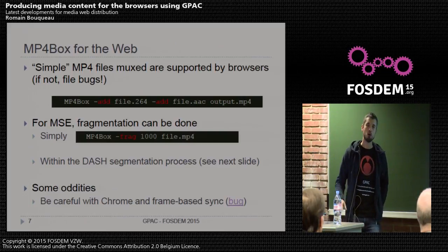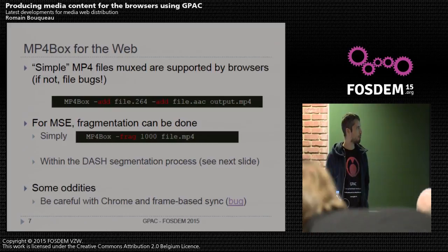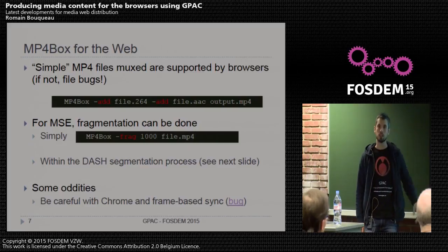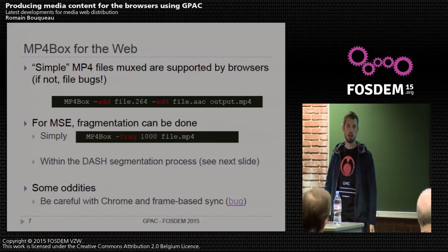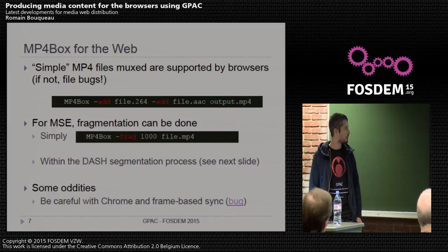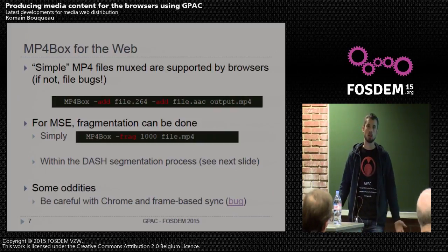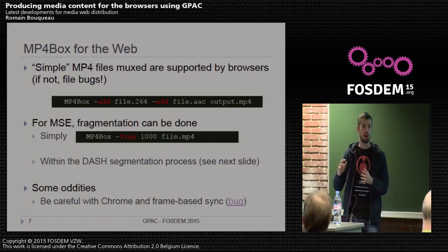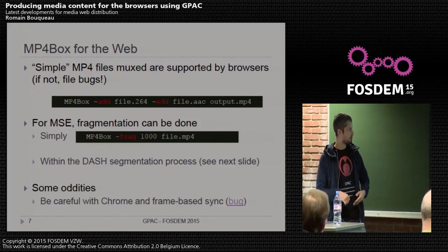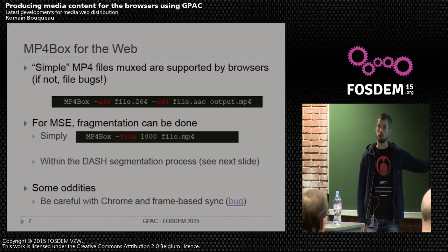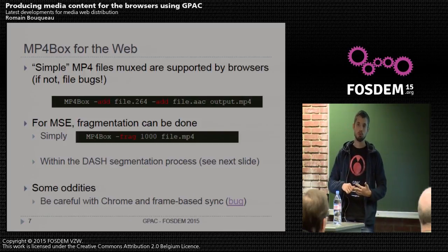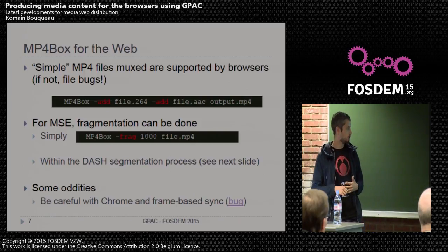With MP4Box you can mix audio and video inside a file with a simple command line. If you want your content to be compatible with Media Source Extensions — for example to switch quality mid-playback between a low bit rate and a high bit rate version — you can fragment your content and seamlessly switch fragments from different quality levels to the media decoder.